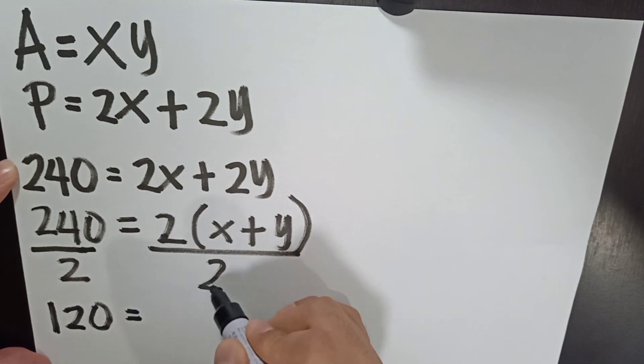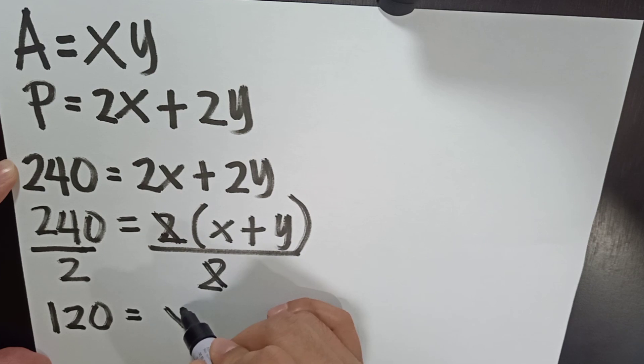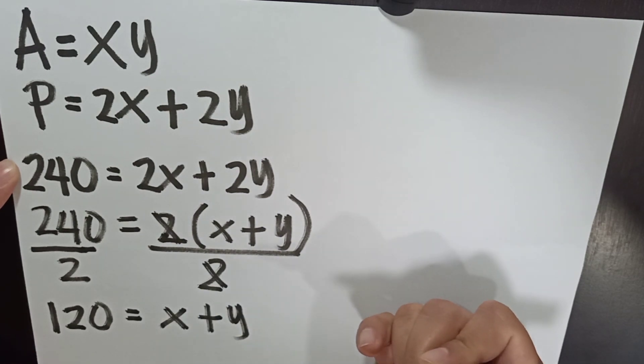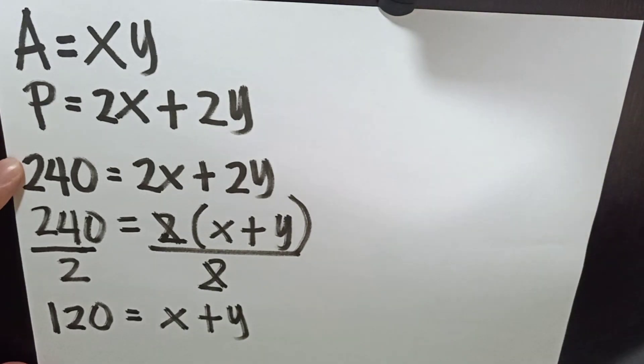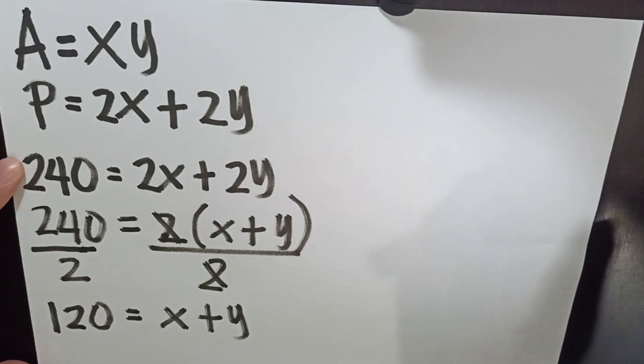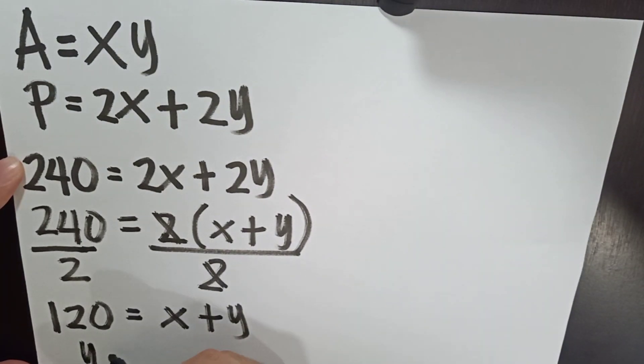2 divided by 2, or just cancel this one. We have now x plus y. Since we are going to express area as a function of its width, therefore, y is equal now to 120 minus x.